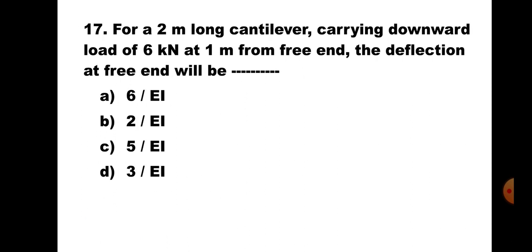Question number 17. For a 2m long cantilever carrying a downward load of 6kN at 1m from the free end, the deflection at the free end will be: A. 6/EI, B. 2/EI, C. 5/EI, D. 3/EI. The cantilever is the same as the previous case, but here deflection at the free end is asked. Deflection at free end equals deflection under the load plus slope under the load multiplied by the remaining distance: 2/EI + (3/EI × 1) = 5/EI. The correct answer is C. 5/EI.